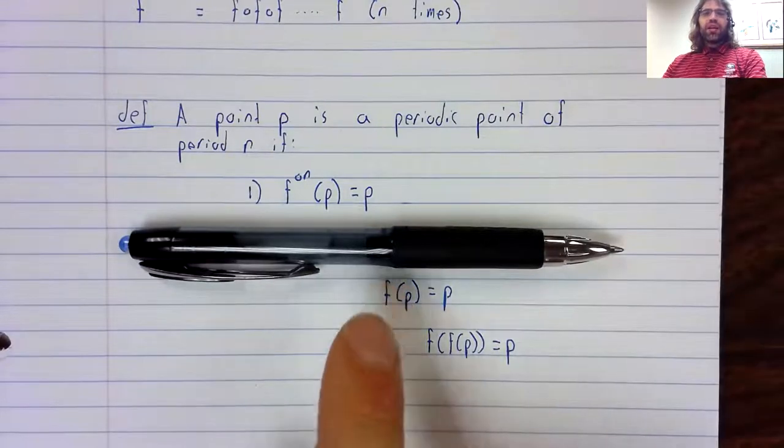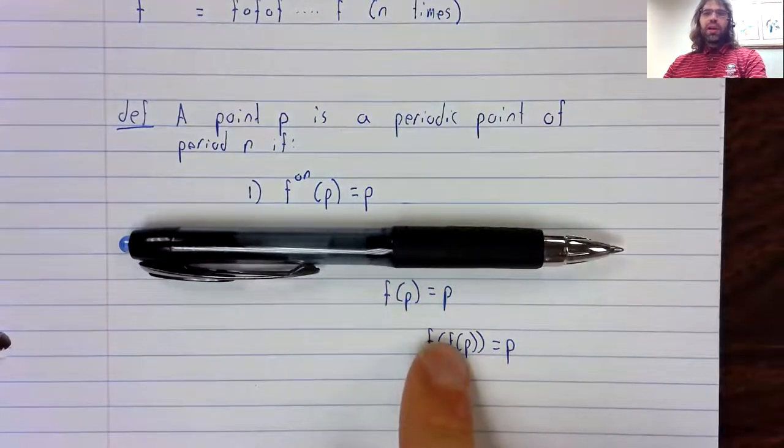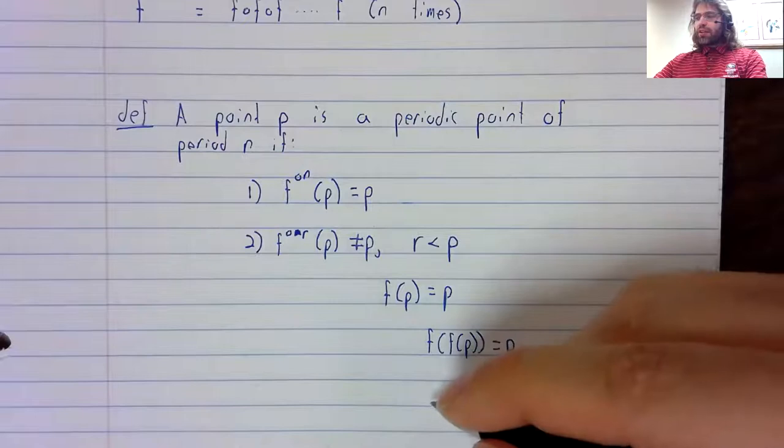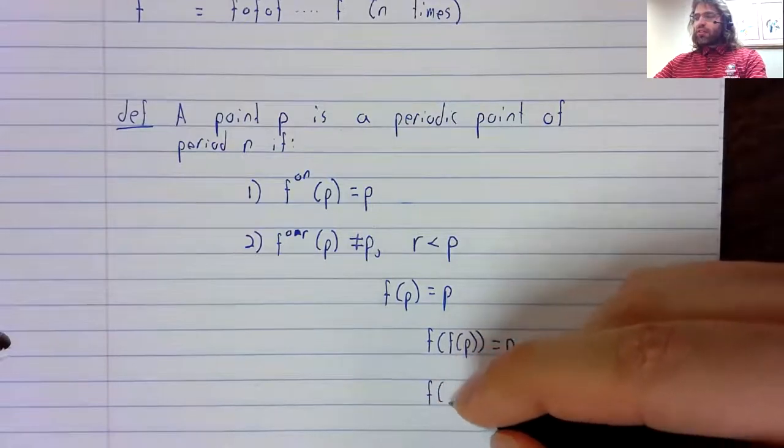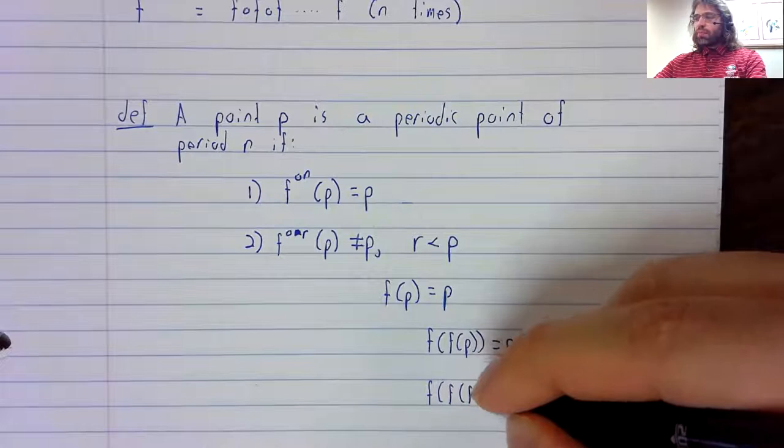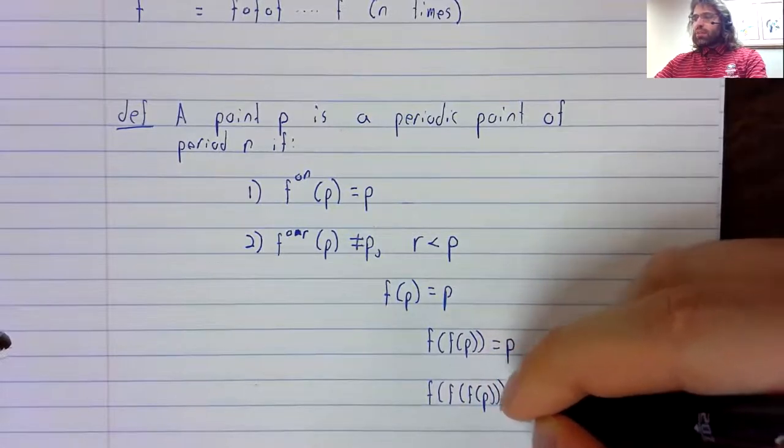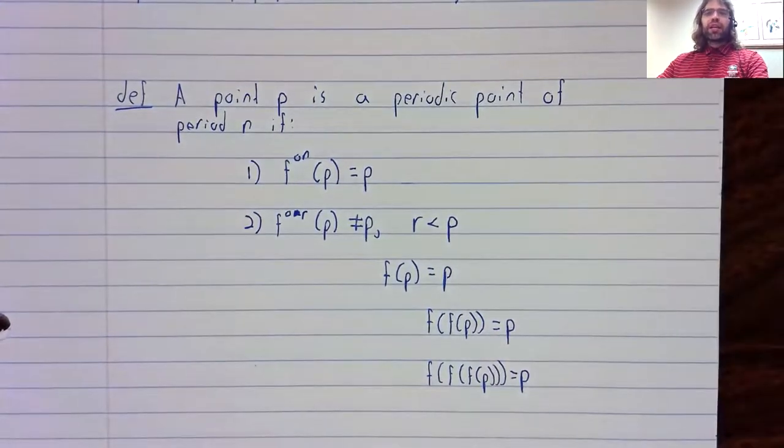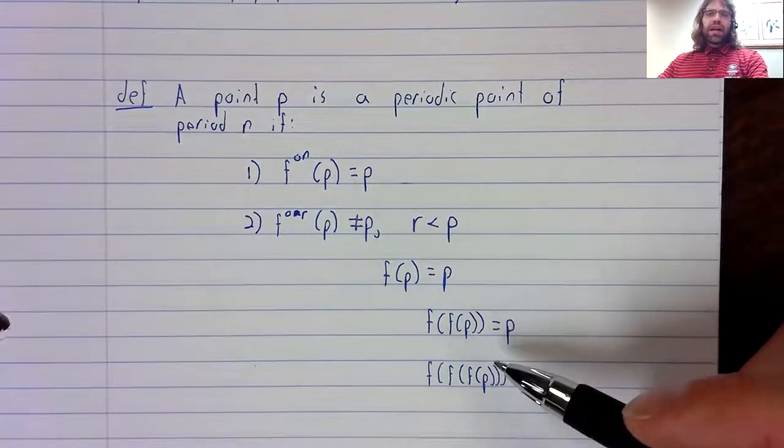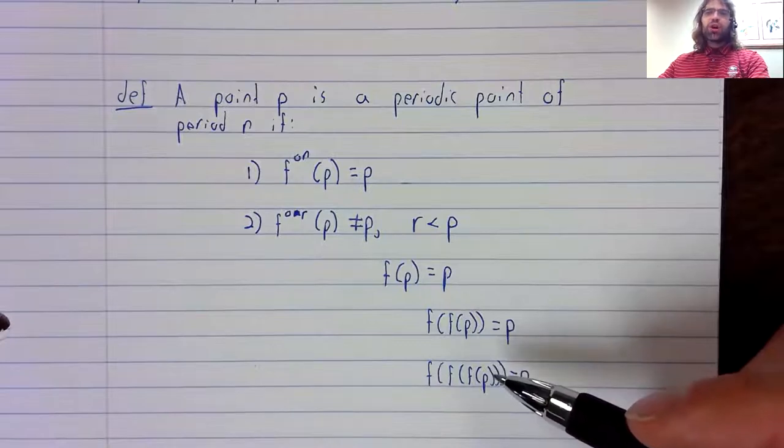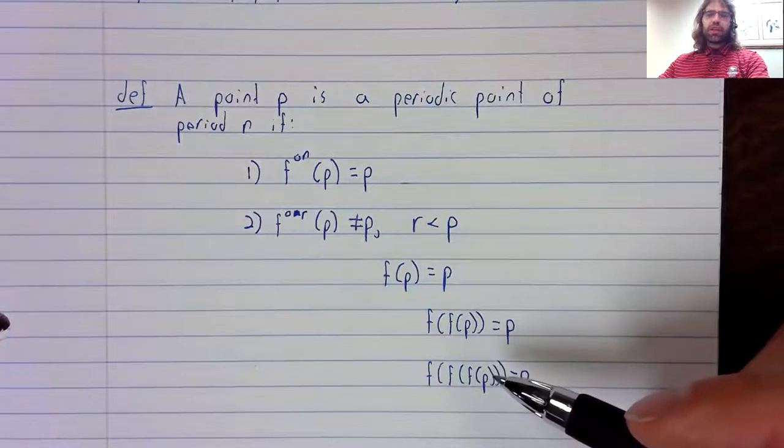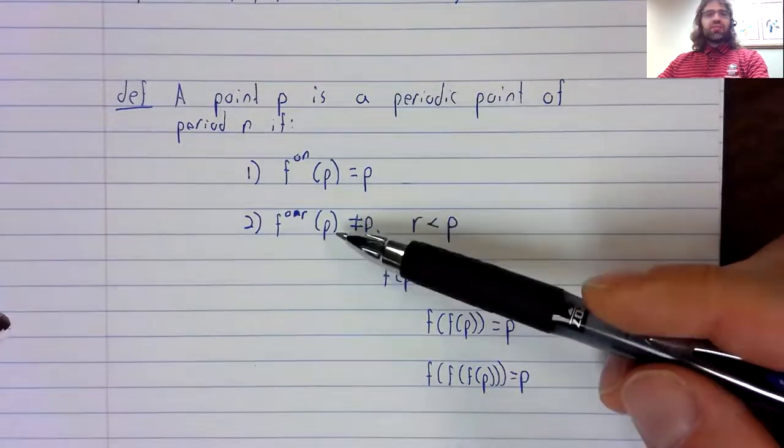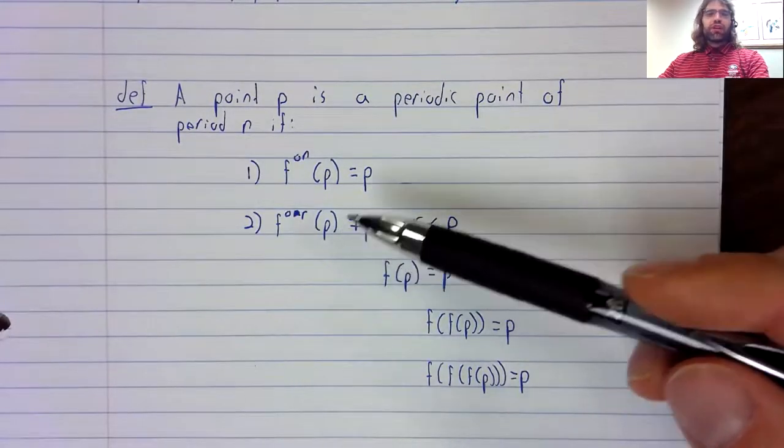then any fixed point is also a periodic point of period two. And in fact, any fixed point would also be a periodic point of period three, period four, any period. And we don't want that. We don't want fixed points to also be periodic points. So the second condition is just getting rid of that.